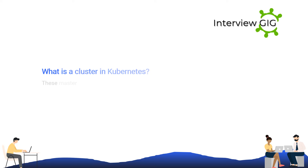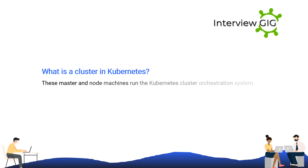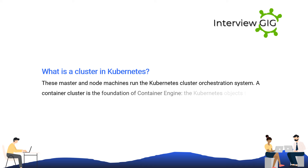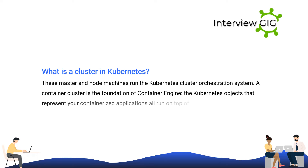What is a cluster in Kubernetes? Master and node machines run the Kubernetes cluster orchestration system. A container cluster is the foundation of the container engine, and the Kubernetes objects that represent your containerized applications all run on top of a cluster.